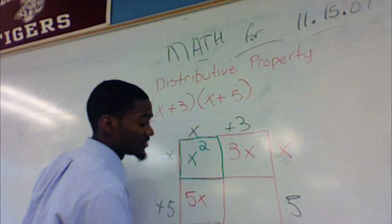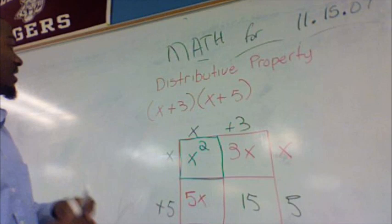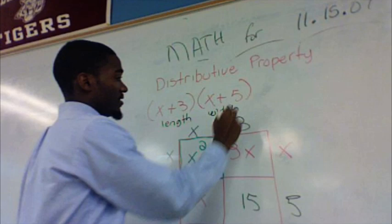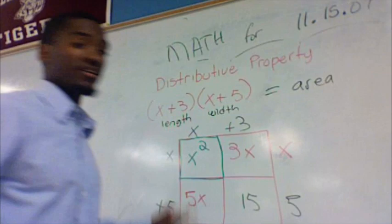So we've just found out that this length, which is x plus 3, times this width is equal to the area of this entire square. And what is the area of the entire square? You just have to add up all four sections.